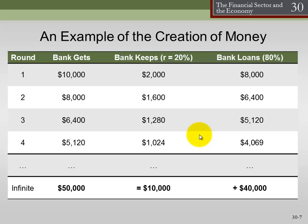Let's look at a numerical example. Say the bank gets an initial deposit of $10,000, and the reserve ratio — how much the bank is required to hold in reserves — is 20%. The bank keeps $2,000 in reserve and makes a loan of $8,000. Initially the money supply increased by $10,000. The bank lends out $8,000; whoever borrows it buys something, and then deposits it back into a bank.